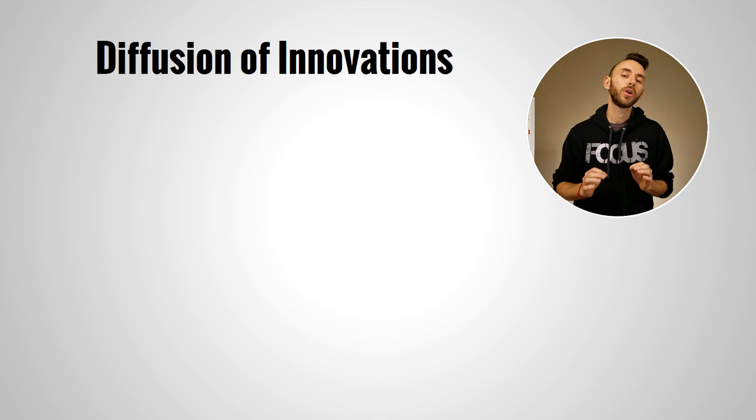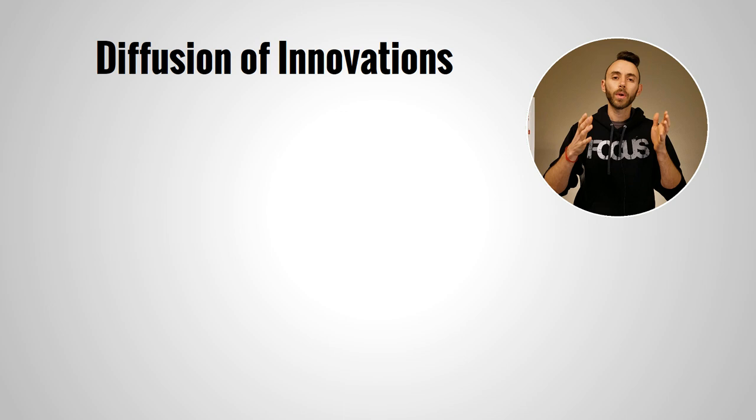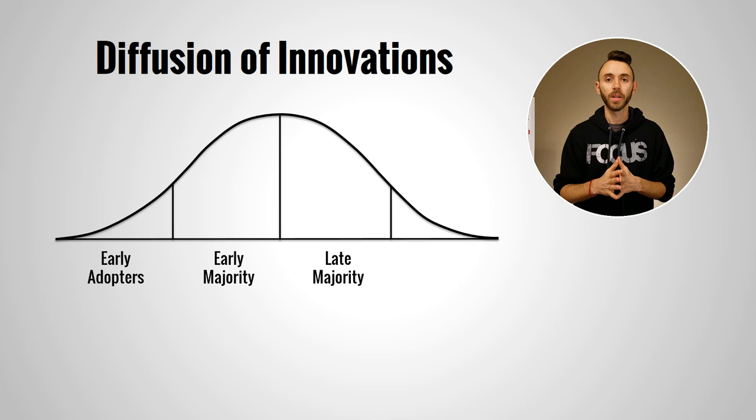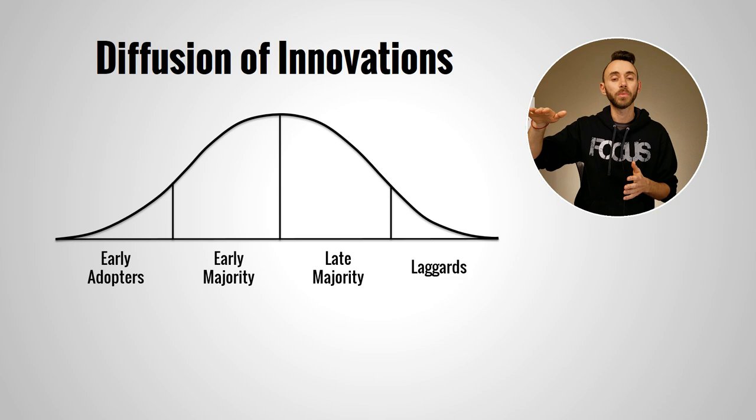When we talk about early adopters in terms of entrepreneurship, what we're referring to is a group of people represented by the diffusion of innovations curve. The very first group of people on this curve are the early adopters — the very first customers of a new product. Once a product has early adopters, it will be followed by the early majority, late majority, and the laggards. This curve represents the growth of a product over time in terms of customers.